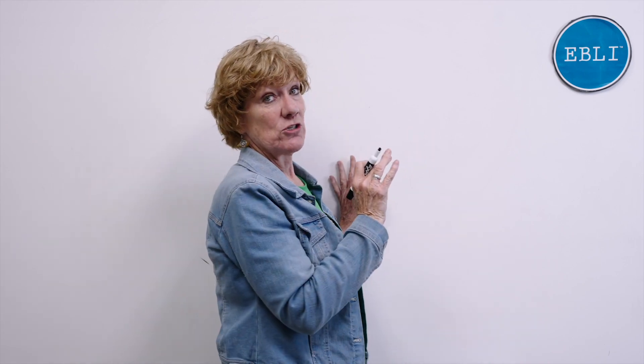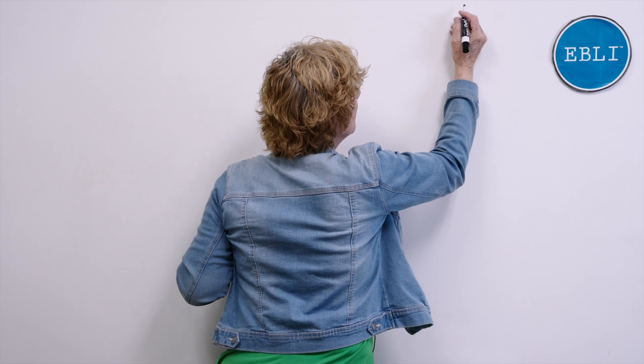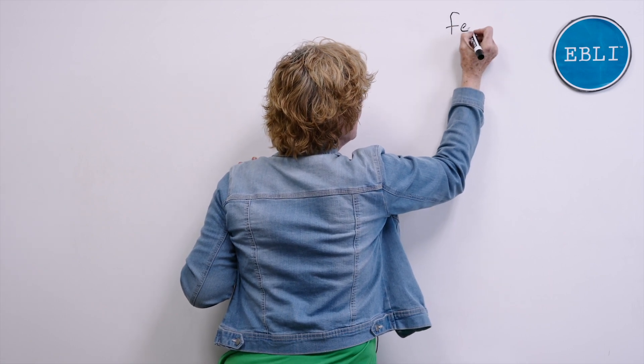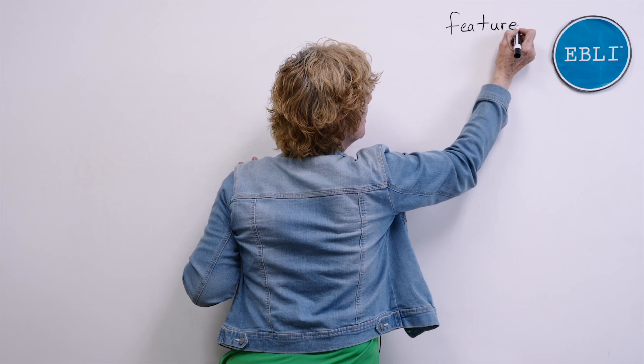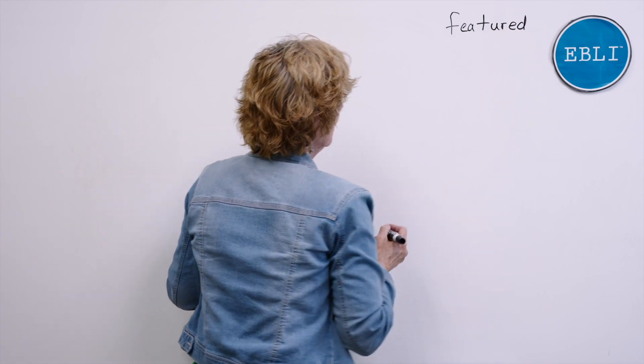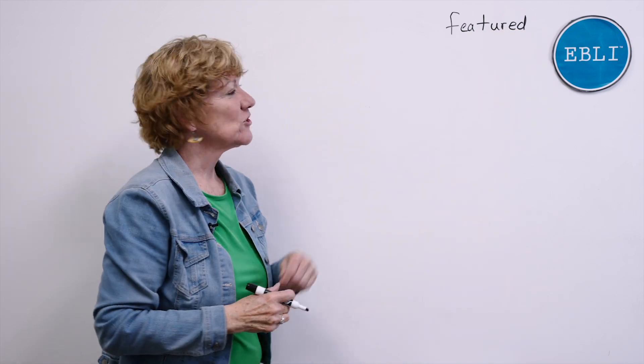You featured the word featured on your board. So erase. Say every sound please for fee and then ch. Say those sounds as you write. All right. Now we're going to check it. If anything's different, be sure and change it so it looks like mine. Fe. F. E. Chured. Ch. Er. D. Featured. Got it? Featured.